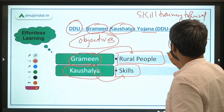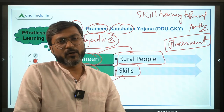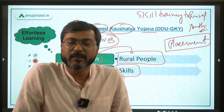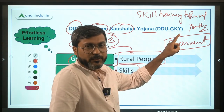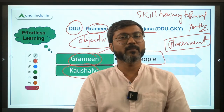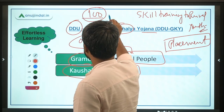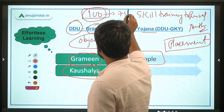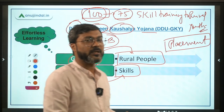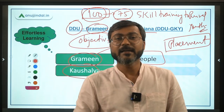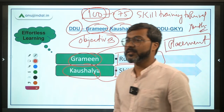Importantly, in various government schemes where skill training is provided, they are not bothered with providing placement. But here, this particular scheme provides skill training to the rural youth along with placement. If 100 people are trained under this scheme, at least 75% of them will get placement.